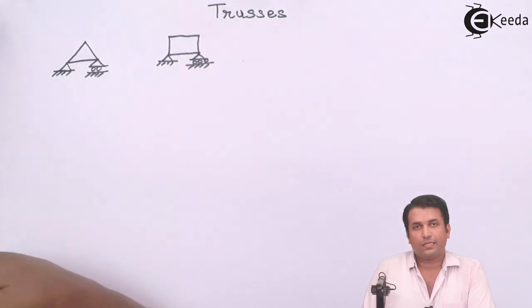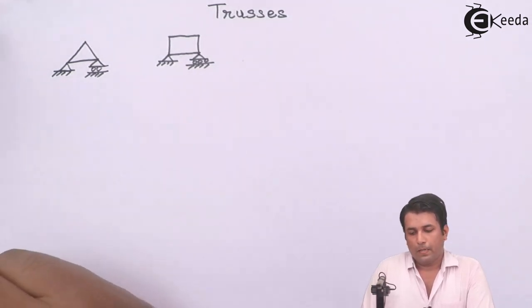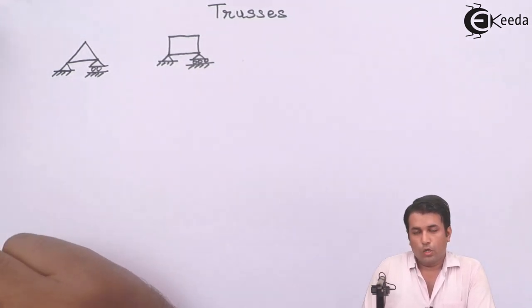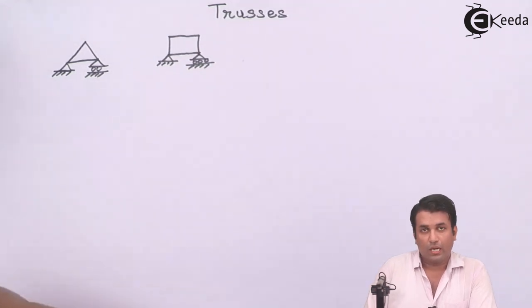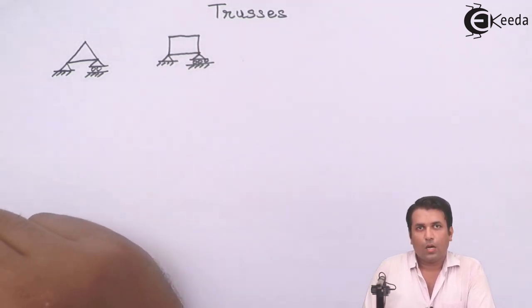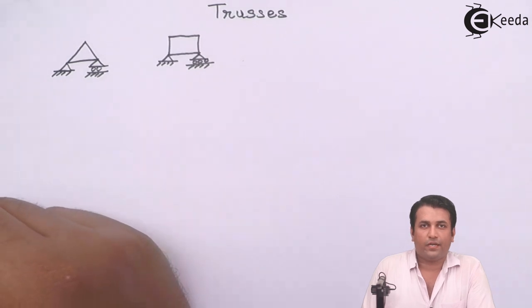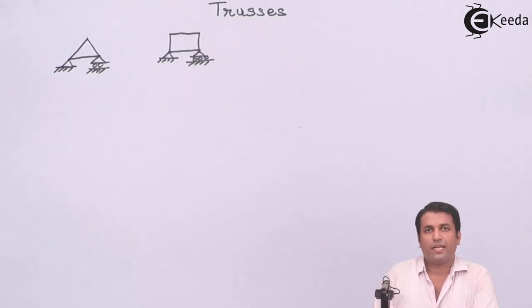This is a second form of truss which is not stable. We will discuss what is the stability criteria of a truss. Trusses are basically the building structures which you see on a regular basis.